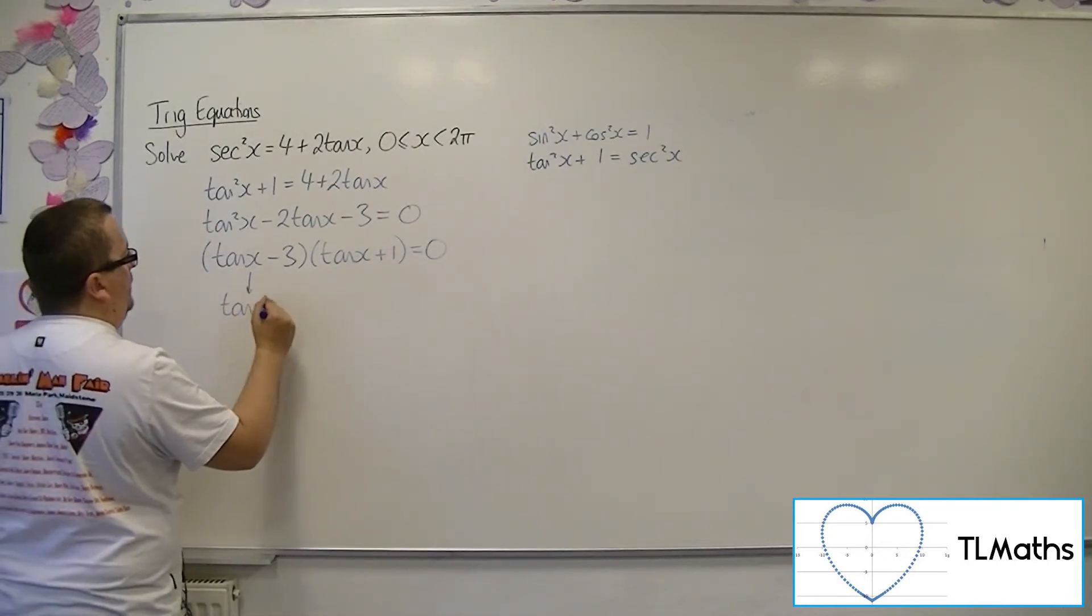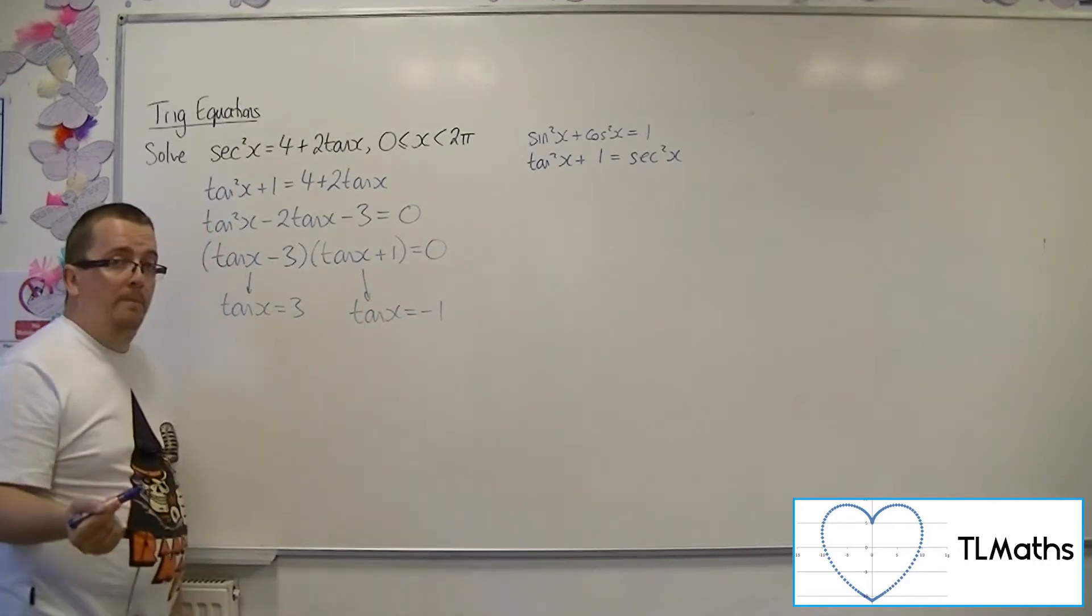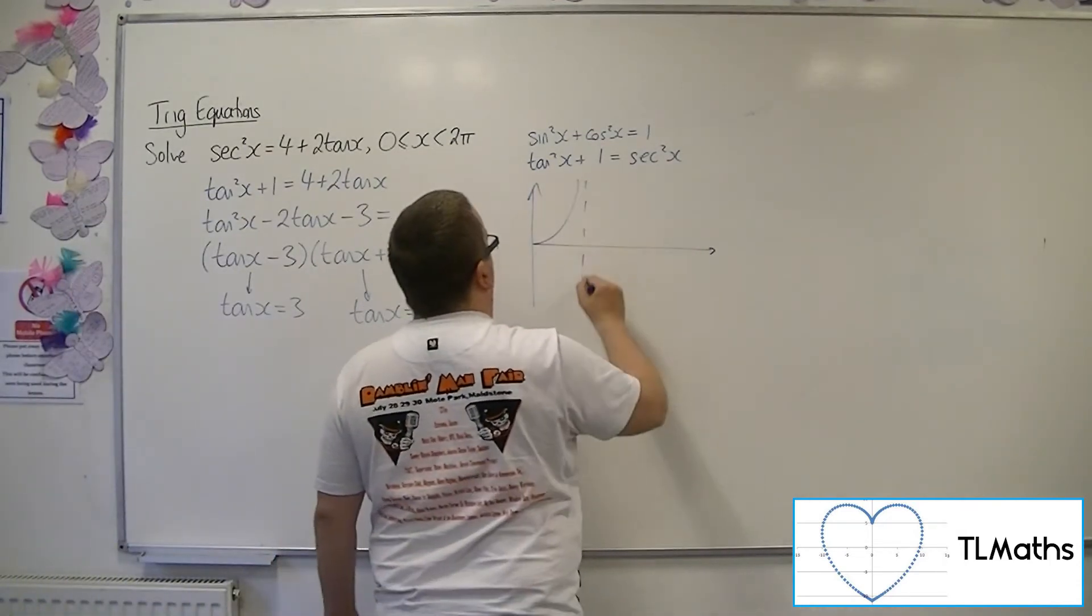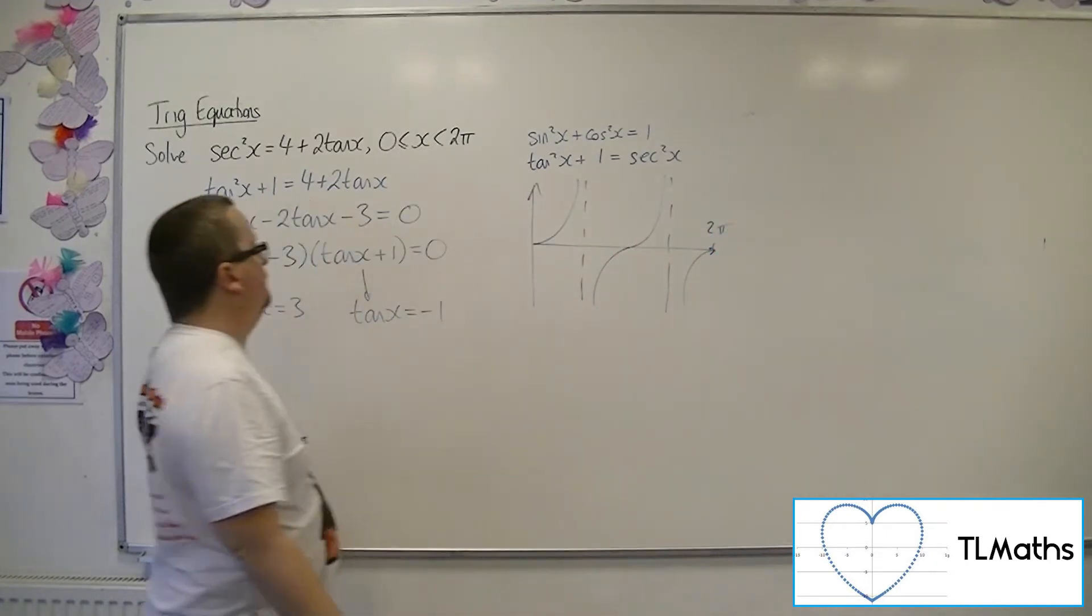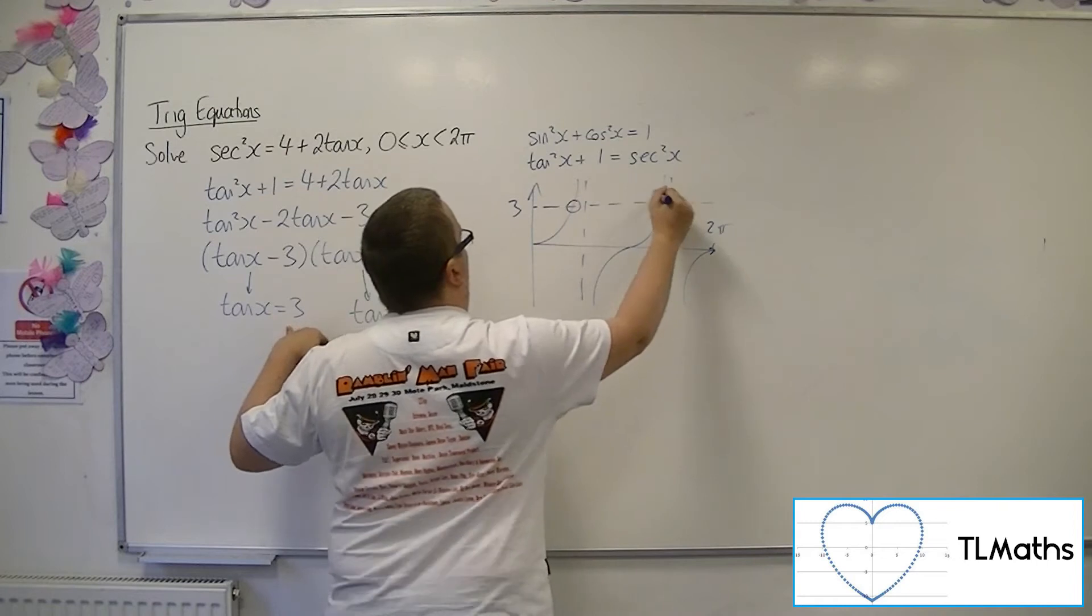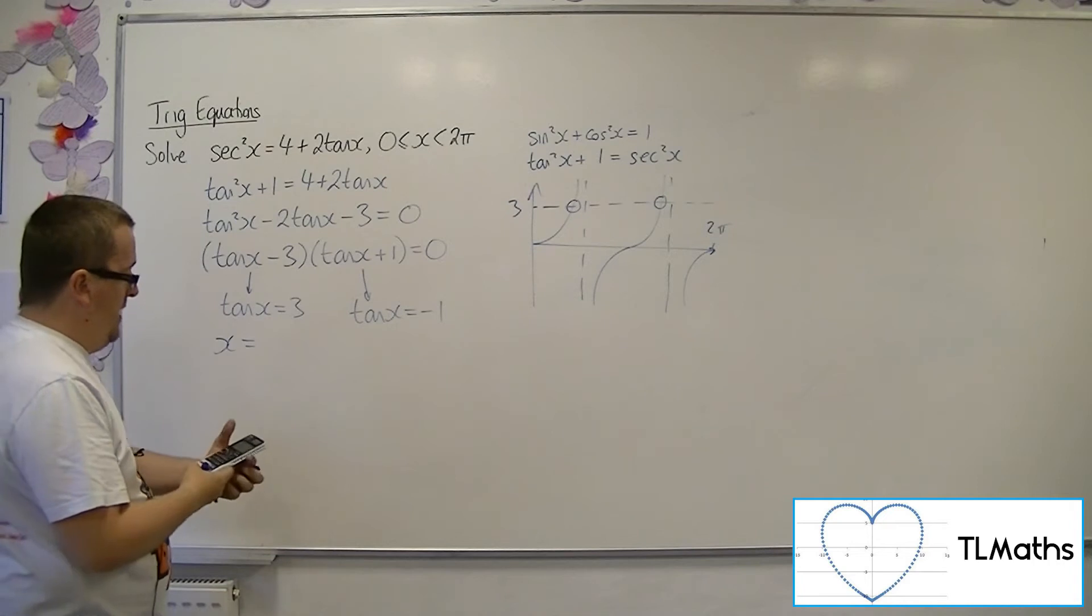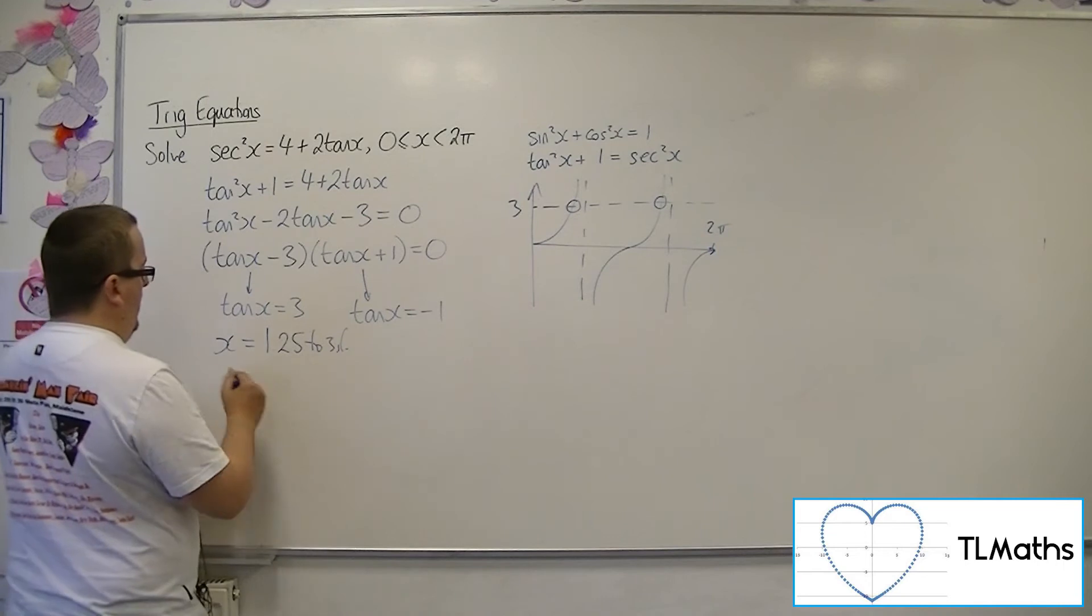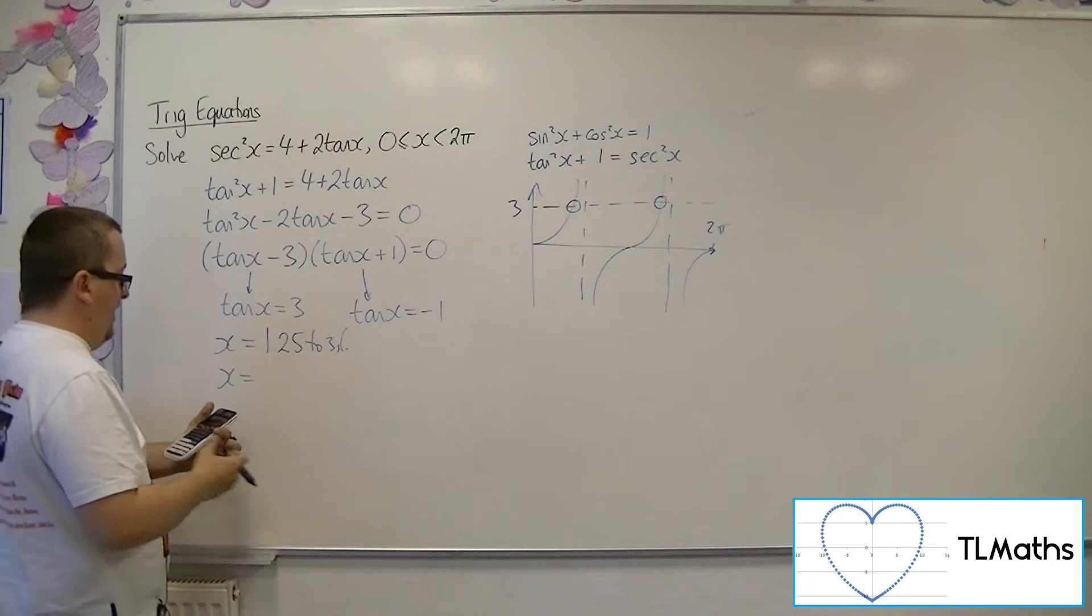So either this bracket is 0, in which case tan x equals minus 1. If I sketch tan between 0 and 2 pi, then 3 will be up here, so I'm expecting two solutions. Inverse tan of 3 gets me 1.25 to 3 sig figs, and adding on pi to get to the second solution gets me 4.39.